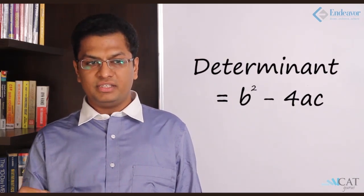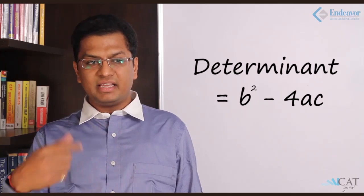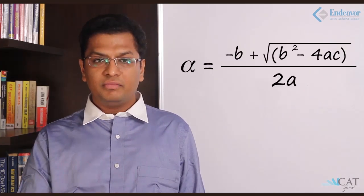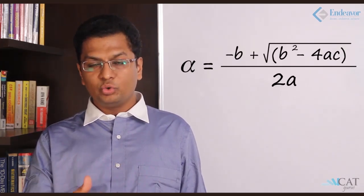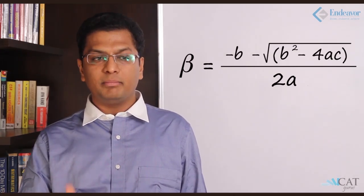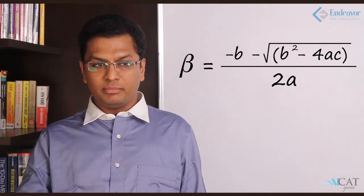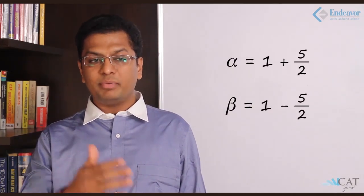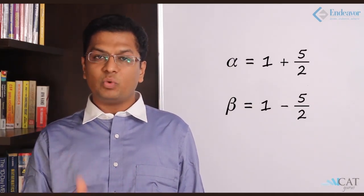Now let us go ahead and solve it. There is something called a determinant here. The determinant is nothing but b² - 4ac, where a, b, c are the same values we just discussed. There are two roots normally in an equation. The first root alpha is (-b + √determinant) / 2a, and the second root beta is (-b - √determinant) / 2a. Putting the values of a, b, c, we get alpha = (1 + 5) / 2 and beta = (1 - 5) / 2.